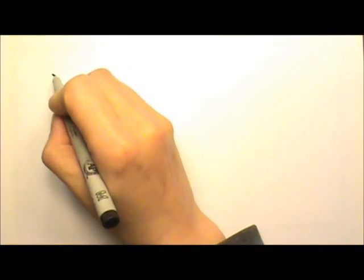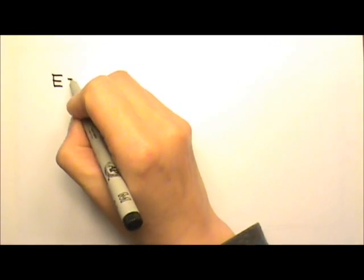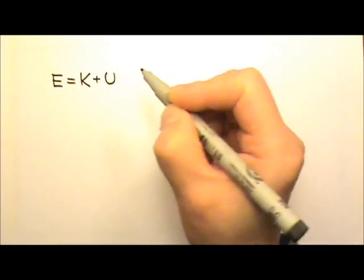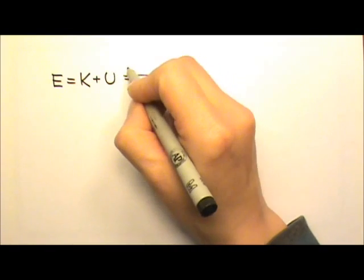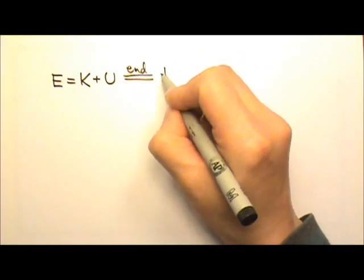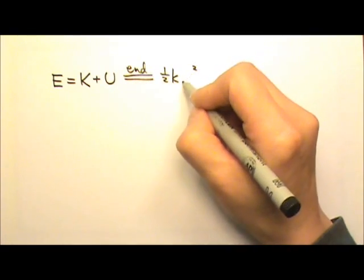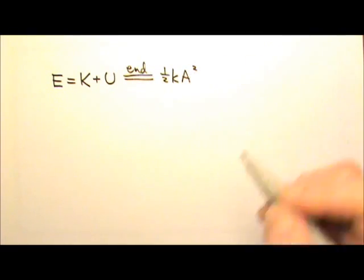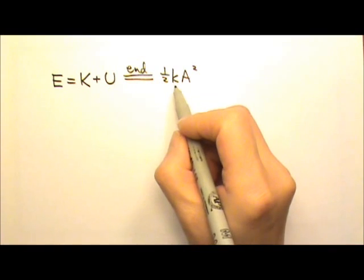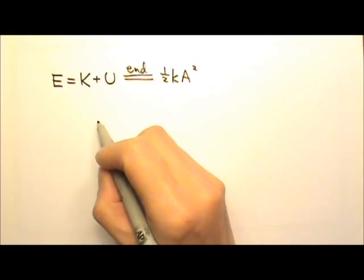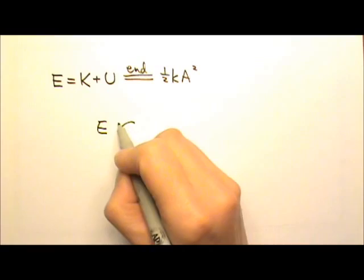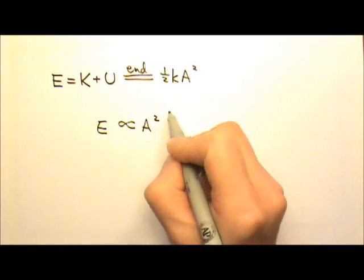If you remember, the total mechanical energy of a simple harmonic oscillator is E equals the kinetic energy K plus the potential energy U. At the end point, there's one half kx squared, and the x is the amplitude. This means for the same medium, the same k, the energy carried by a simple harmonic oscillator is proportional to the amplitude squared.